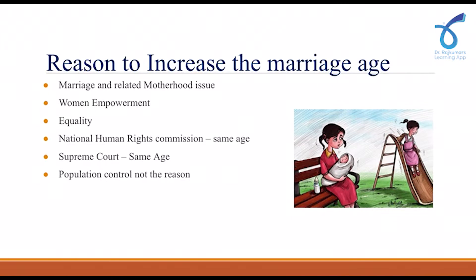The government has come up with different reasons to increase the age of marriage for women. The first reason is issues related to marriage and motherhood. When a girl is married at an early stage, there are various issues related to pregnancy — there are miscarriages, female infanticide, and even female foeticide. This was one of the key reasons for which the government is bringing this act.